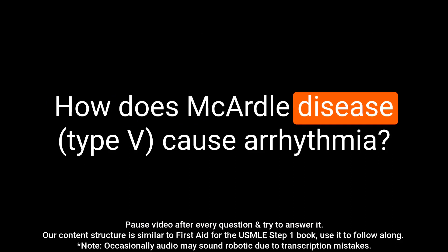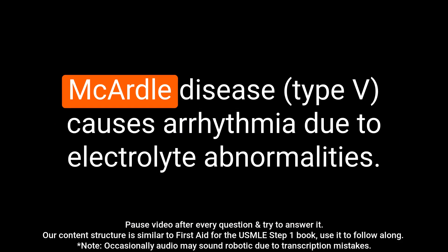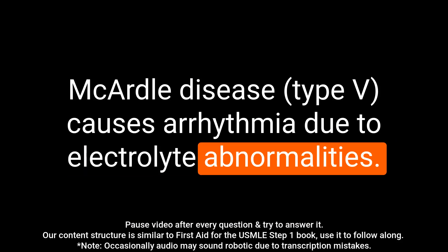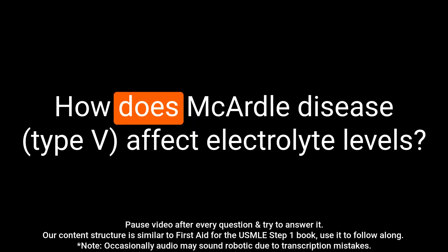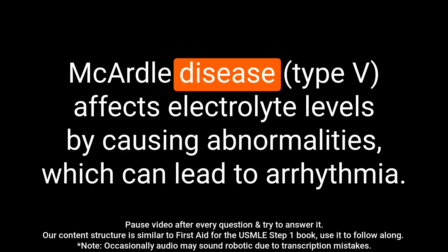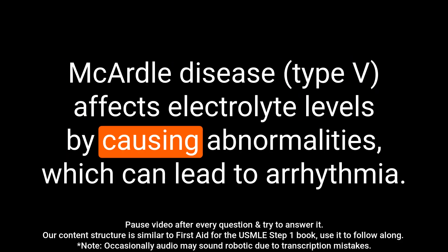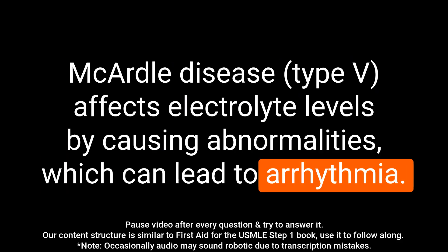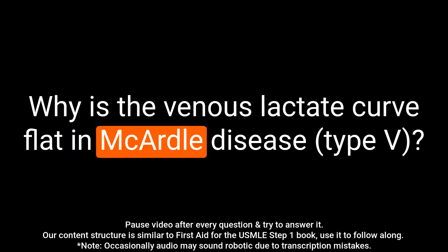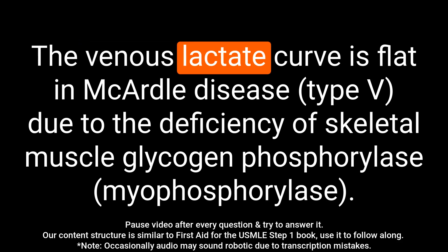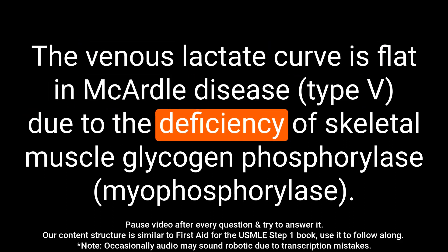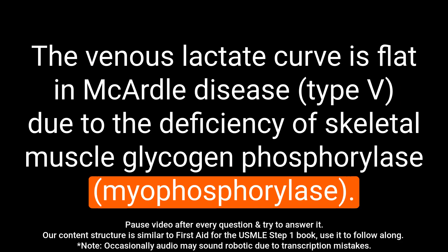Question: How does McArdle disease cause arrhythmia? Answer: McArdle disease causes arrhythmia due to electrolyte abnormalities. Question: How does McArdle disease affect electrolyte levels? Answer: McArdle disease causes electrolyte abnormalities which can lead to arrhythmia. Question: Why is the venous lactate curve flat in McArdle disease? Answer: The venous lactate curve is flat in McArdle disease due to the deficiency of skeletal muscle glycogen phosphorylase.